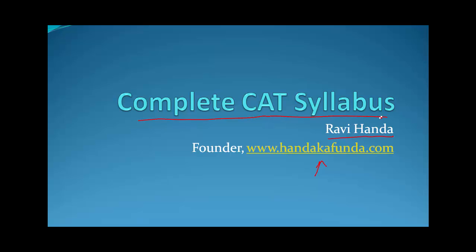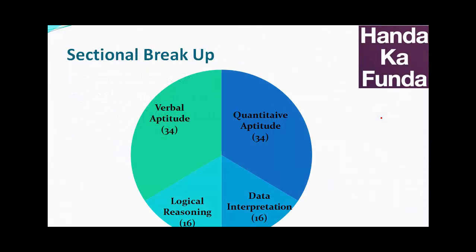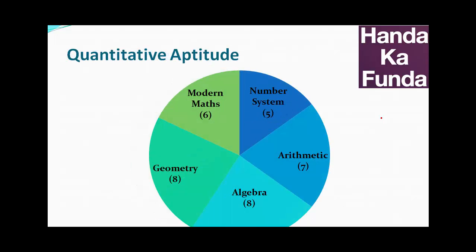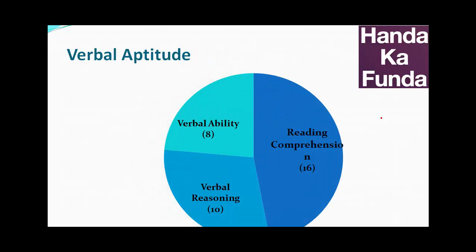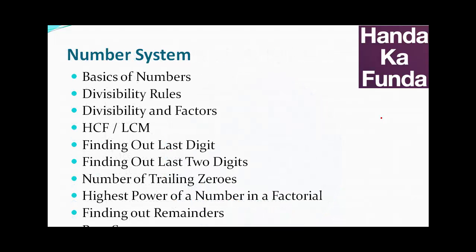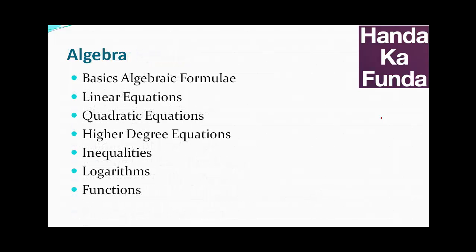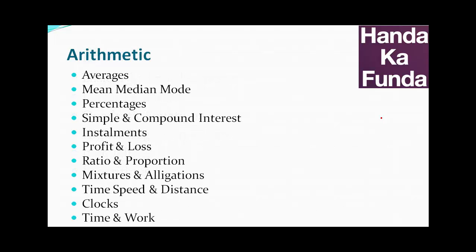I have already recorded a few videos in this series. In the earlier videos we first talked about what the complete CAT syllabus was, what was the sectional break-up, what is quant made of, what is verbal made of and stuff like that. Then in one video I talked about the complete details of number system, in another video I talked about algebra, and in today's video I will talk about the complete details of arithmetic.